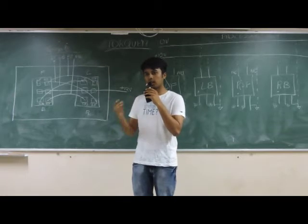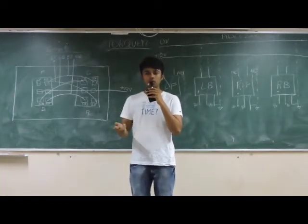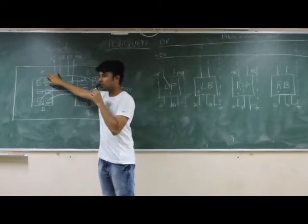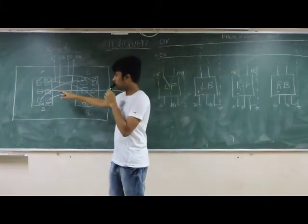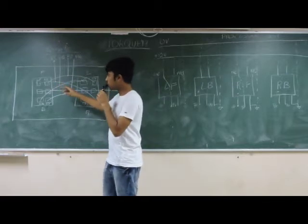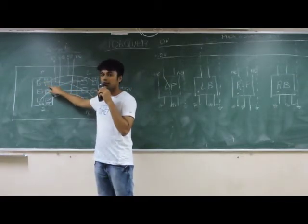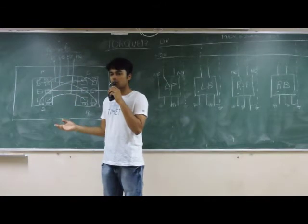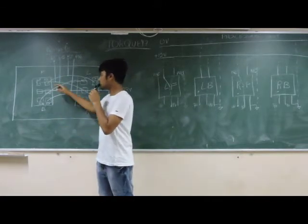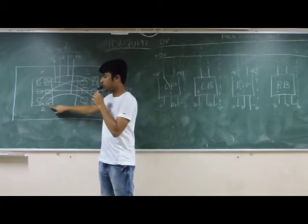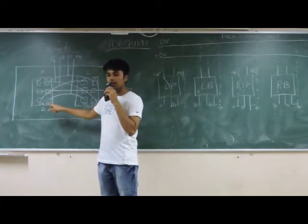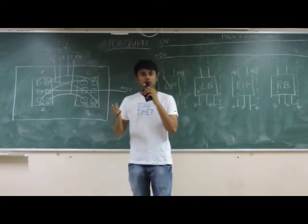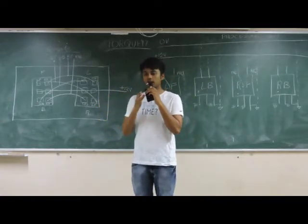Let's start with what happens in the forward condition — what will be the motion of the left side and right side. In the forward condition the whole board moves in the forward direction, so we need left forward and right forward commands. Similarly for the backward condition, the left part should be backward and right part should also be backward — both sides move in the backward direction.